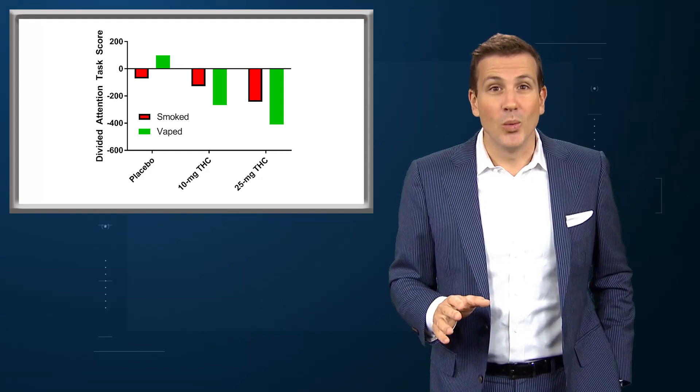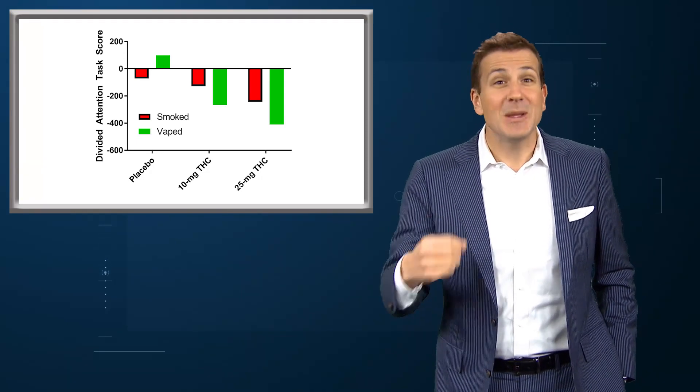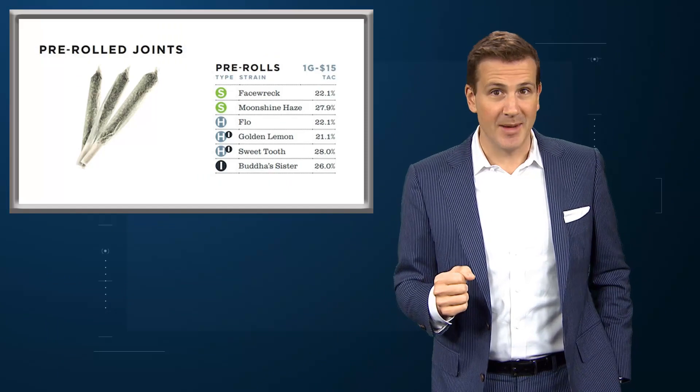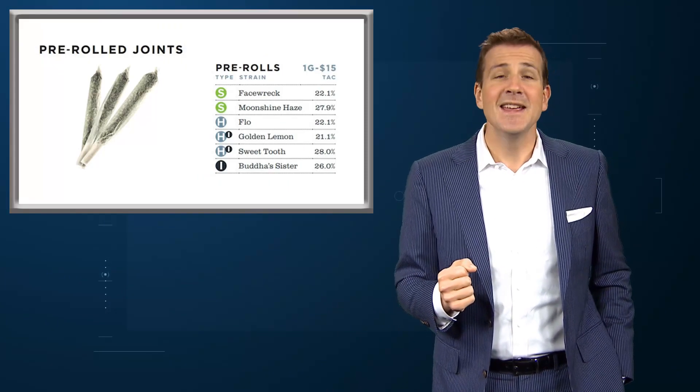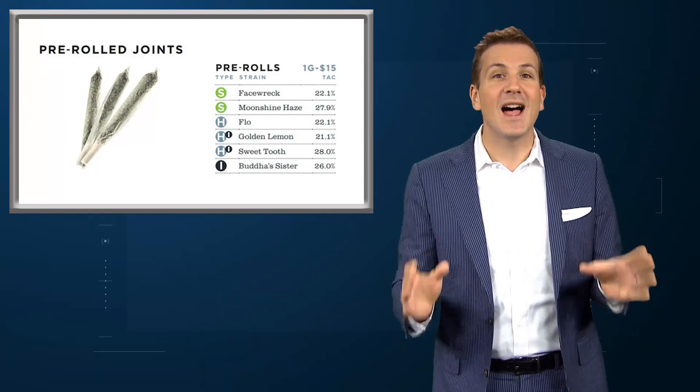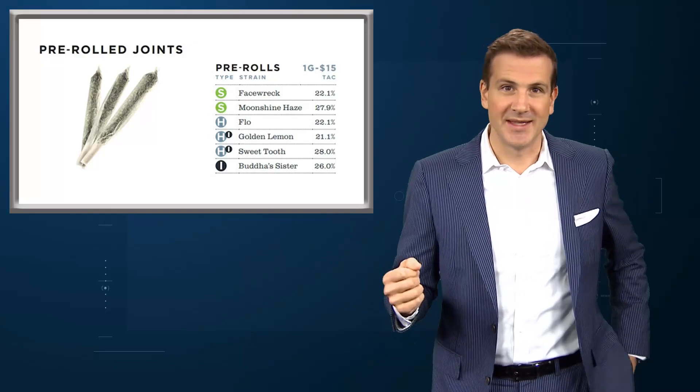25 mg of THC was enough to make two participants vomit. But those doses actually pale in comparison to what is available at recreational marijuana shops. In Massachusetts, for example, a 1-gram joint called Face Rec containing 22% THC runs you 15 bucks. That's roughly tenfold higher amounts of THC than what was used in the high-dose group in this study.